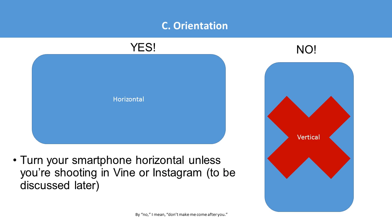A quick PSA: I have a problem with vertical video. It's common on smartphones because it feels natural, but video does not turn sideways like photos do. Always shoot your video horizontally — turn that phone to the side — unless you're using a specialty app like Vine or Instagram that creates a square image.